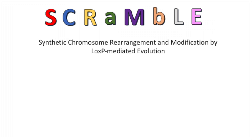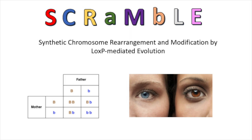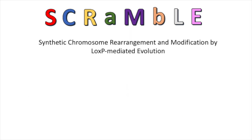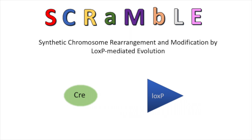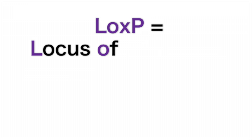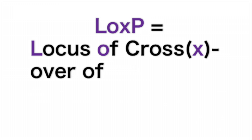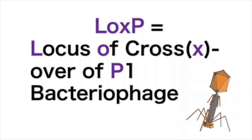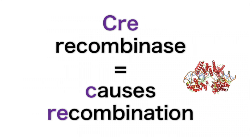SCRAMBLE is a technique developed in synthetic biology to create genotypic and phenotypic changes. It is dependent on two cellular components: a Cre recombinase enzyme, which induces changes in the DNA, and LoxP sites that direct the Cre recombinase. The LoxP acronym is derived from 'locus of crossover of P1 bacteriophage', whilst the Cre recombinase name is derived from the words 'causes recombination'.